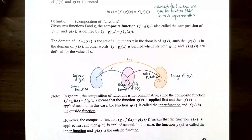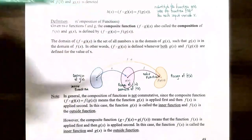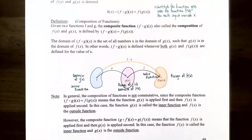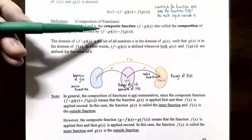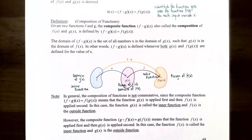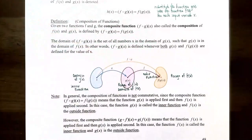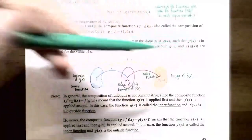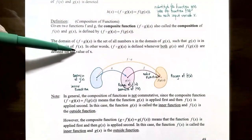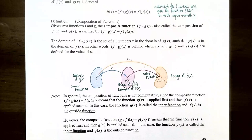The definition of composition of functions: given two functions f and g, the composite function (f ∘ g)(x) is called the composition of f and g, where f is the outside function and g is the inside function. For the domain of this composite function, it is the set of all x values in the domain of g(x) such that g(x) is also in the domain of the outer function f. You need x to be defined for both g(x) and f of g(x).